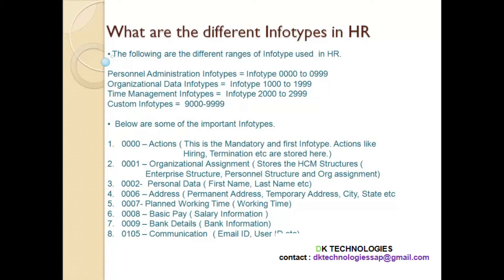Info type 8 is Basic Pay — this info type stores the salary information. Info type 9 stores bank details such as account number, the name of the bank, and the payment method — whether the salary will be paid by check or cash and similar details. The last info type is 105, which is Communication — this info type stores the email ID, user ID, etc.